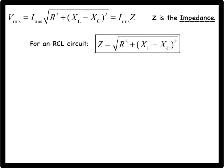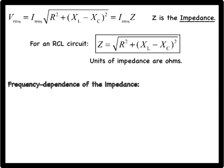Notice that the relationship VRMS equals IRMS times Z has the form of Ohm's law, so the units of impedance are also ohms. Also, recall that XL equals 2π times fL, and XC equals 1 over 2π times fC, which demonstrates the frequency dependence of the impedance.